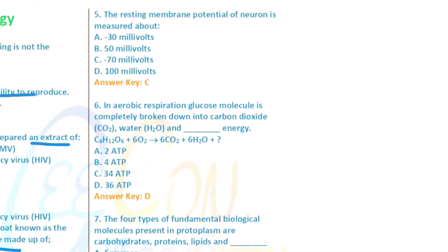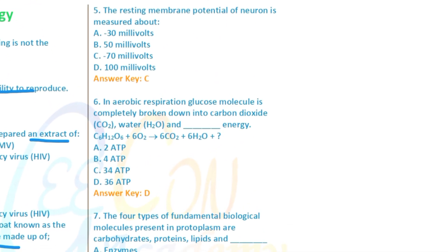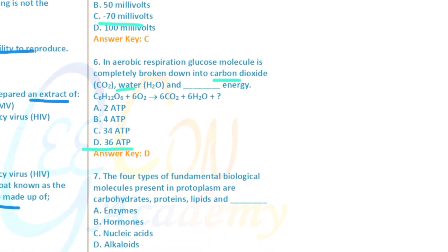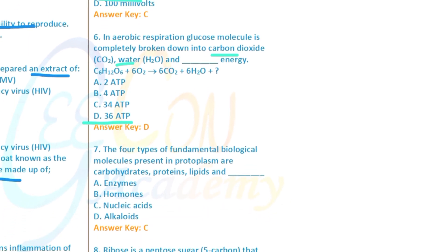Question 9: The resting membrane potential of a neuron is approximately negative 70 millivolts. Question 6: In aerobic respiration, a glucose molecule is completely broken down into carbon dioxide, water, and 36 ATP energy molecules.